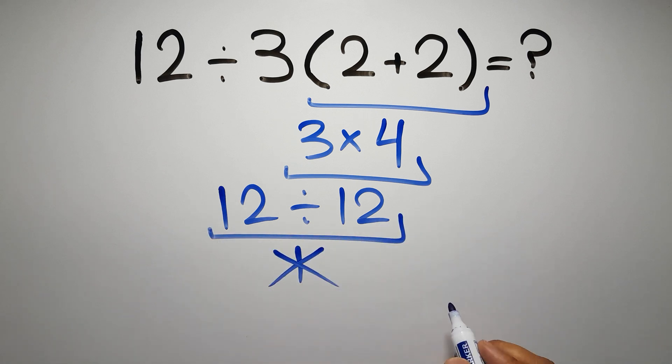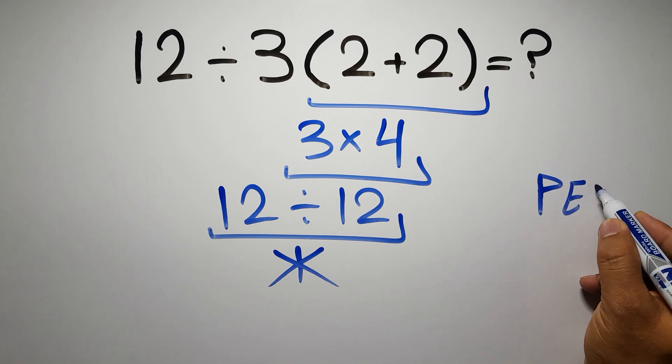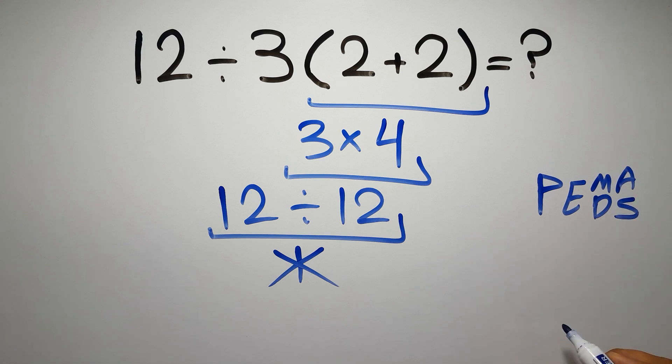According to the order of operations, first we have to do parentheses, then exponents, then multiplication or division, and finally addition or subtraction. Remember that multiplication and division have equal priority, and we have to work from left to right. The same applies to addition and subtraction.